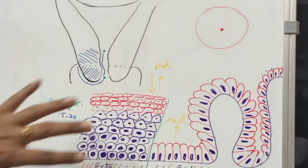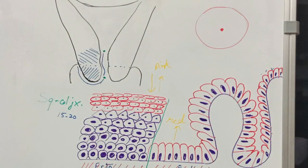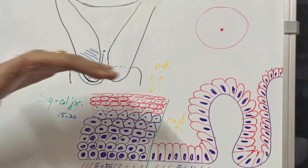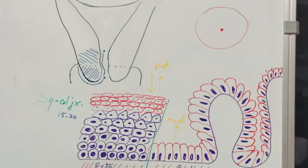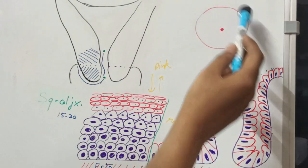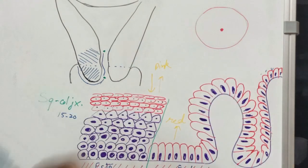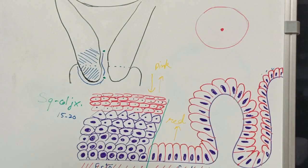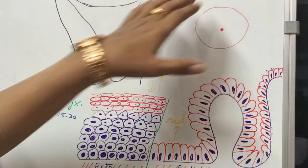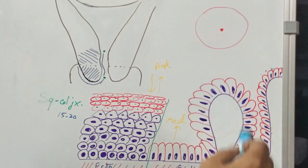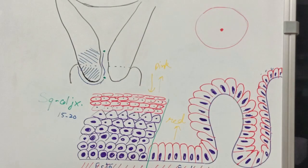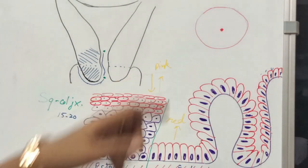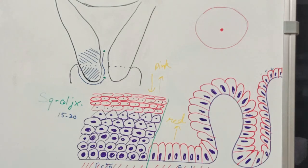Now, talking about how this histology is going to affect the appearance of the cervix on colposcopy. Looking at the transverse section of the cervix — this is how you view the cervix on colposcopy — you will see a circular cervix with the external os in the center. The ectocervical portion appears pink, the endocervical portion appears red, and there will be a sharp demarcation line at the squamocolumnar junction.